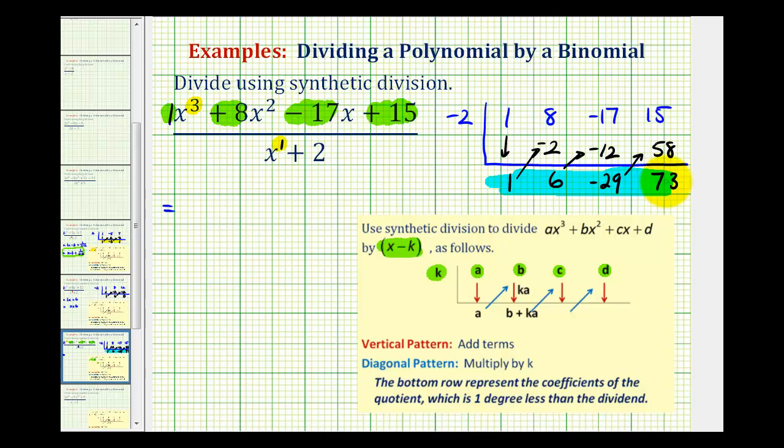Our quotient is 1x² plus 6x minus 29, plus the remainder of 73 over the divisor x plus 2. Normally we don't include the 1 as a coefficient, so the final answer is x² plus 6x minus 29 plus 73 over x plus 2.